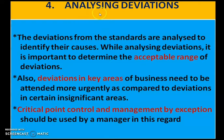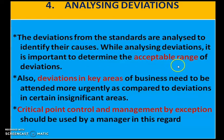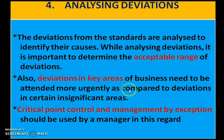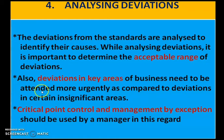That brings us to the fourth step: analyzing deviation. We have to study the deviation and its causes. The deviation from standards is analyzed to identify its causes. While analyzing deviation, it is important to determine the acceptable range of deviation. Deviation in key areas of the business need to be attended more urgently compared to deviation in insignificant areas. If the deviation is in a very important area, it must be attended immediately.